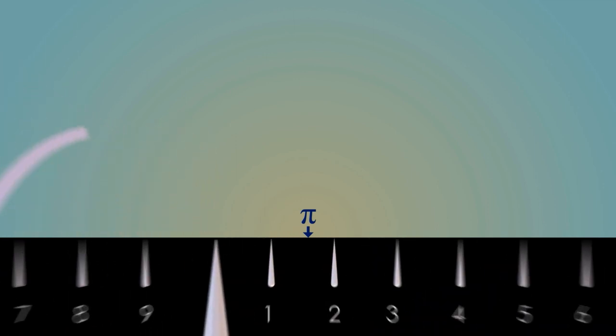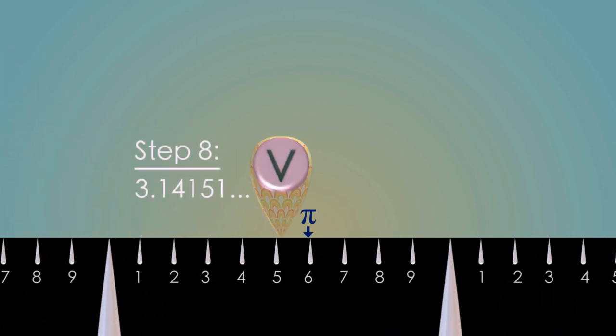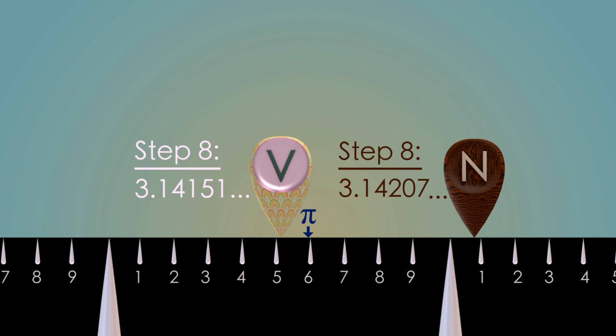If we let this one run for 8 steps, we see we get pi to 4 significant digits: 3.14151. That's 2 more significant digits than we got out of the Nilakantha method at the same rate.